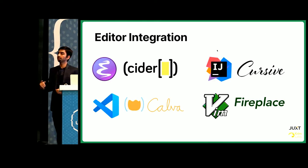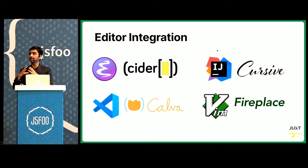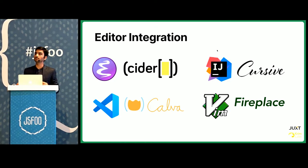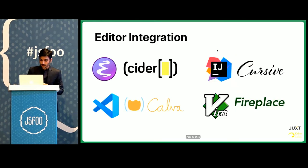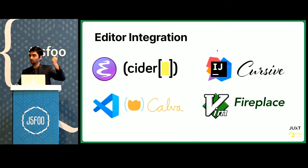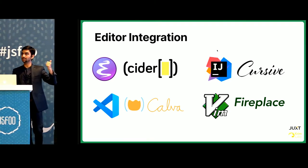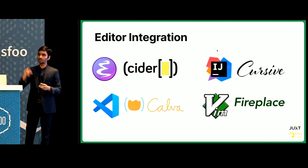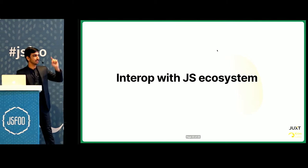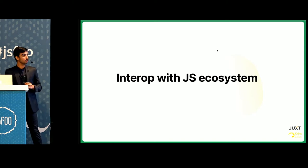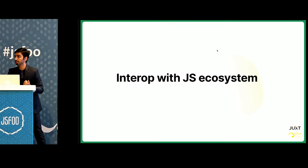The editor integration I was using was CIDER combined with Emacs, but you can connect any editor to the REPL using available plugins — they exist for most major editors. When I first saw the REPL demo, I was convinced there was no way this wasn't fraud, because the feedback cycle is reduced to a point where you just focus on one function. But I want to debunk this — it's very much not fraud, and it has been around for over ten years, to the point where you can interop with the JS ecosystem natively.